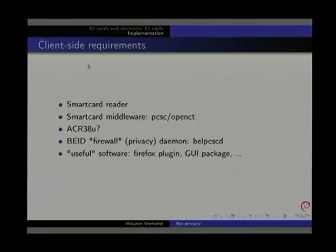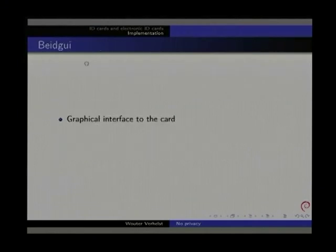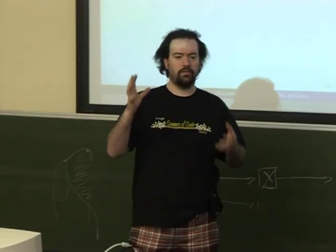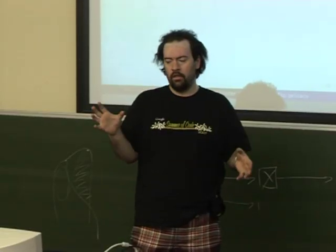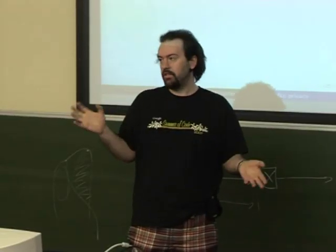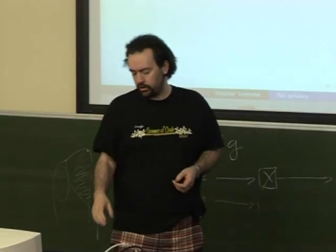There is some useful software: a Firefox plugin, a GUI package to read the cards and print out the data. BID GUI is a graphical interface to the cards which allows you to read the data on the card and show it to users. You can print the data and also change your PIN there.